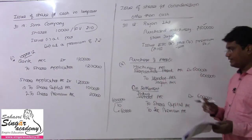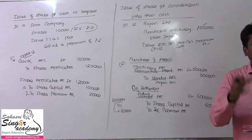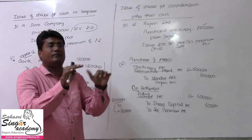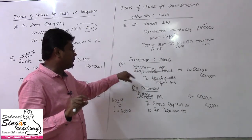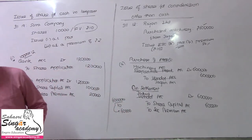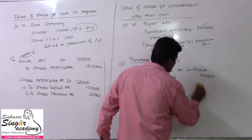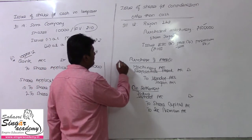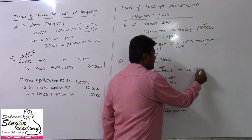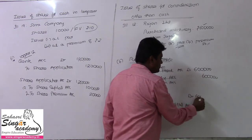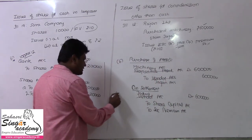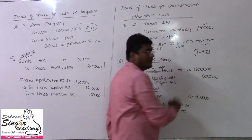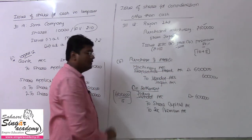Situation B — premiums are available. The purchase entry is the same: machinery account debit to Jagan Traders account — 6 lakhs. On payment, Jagan account debit — but now shares are issued at 50% premium. So face value is Rs. 10, premium is Rs. 5, making the share price Rs. 15. The payment splits between share capital and securities premium accordingly.